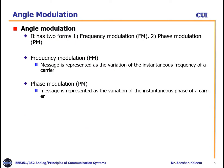Now we will start the main topic: angle modulation. It has two forms or two types. Frequency modulation, which we call FM modulation, and phase modulation, which we call PM modulation. These two are the two branches or two forms of angle modulation. In general we call them angle modulation; in specific we name them frequency modulation or phase modulation.